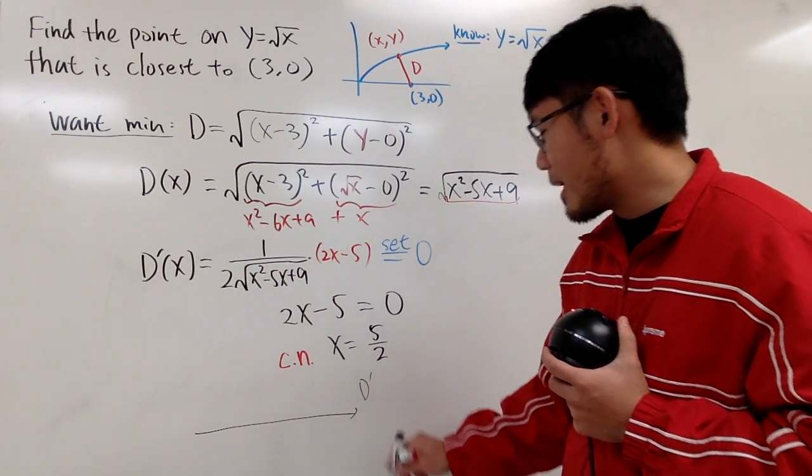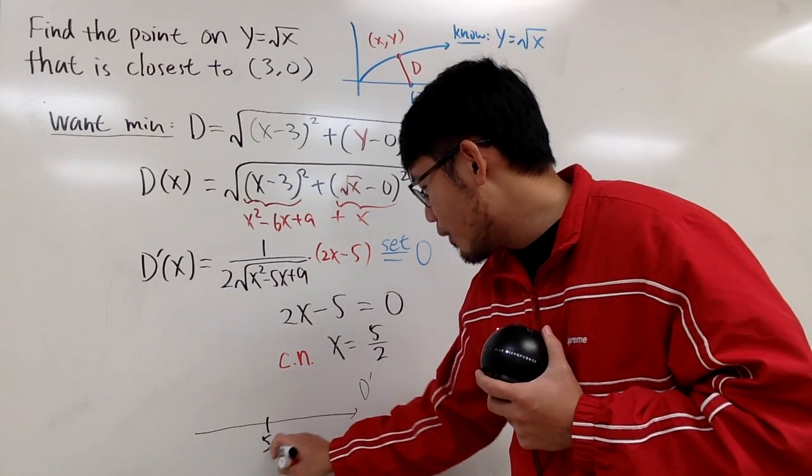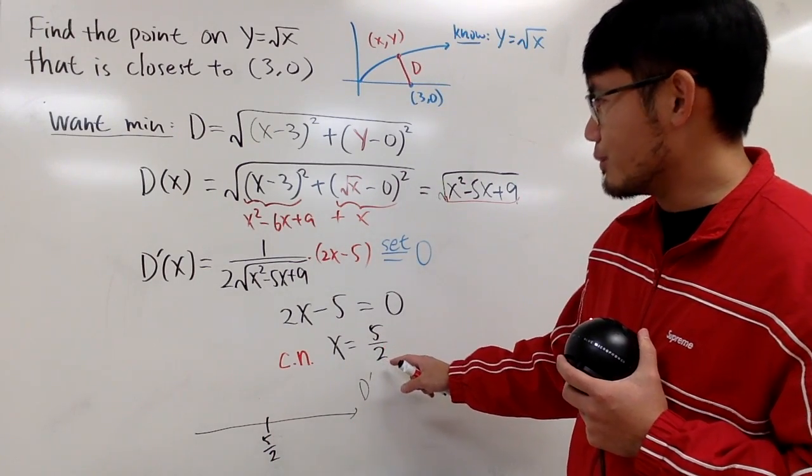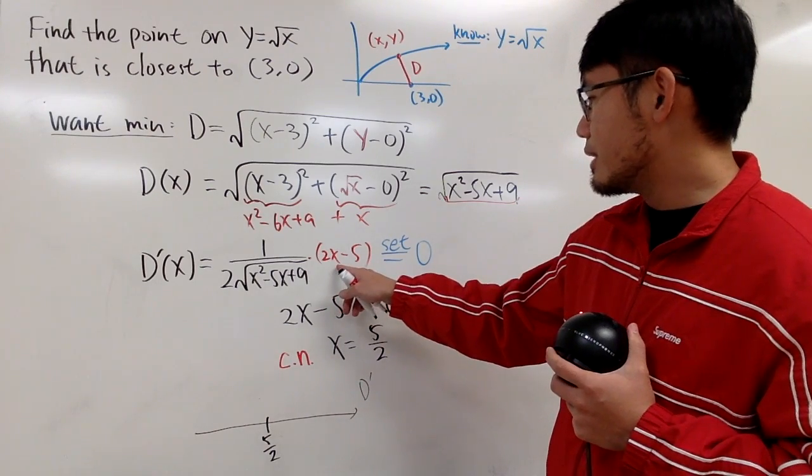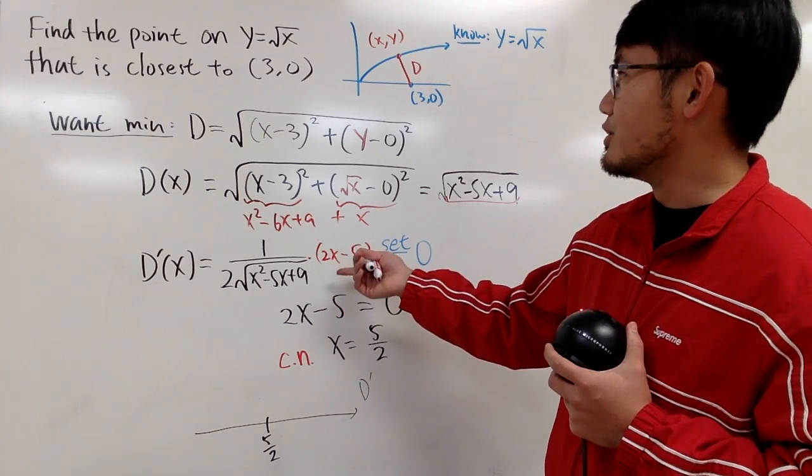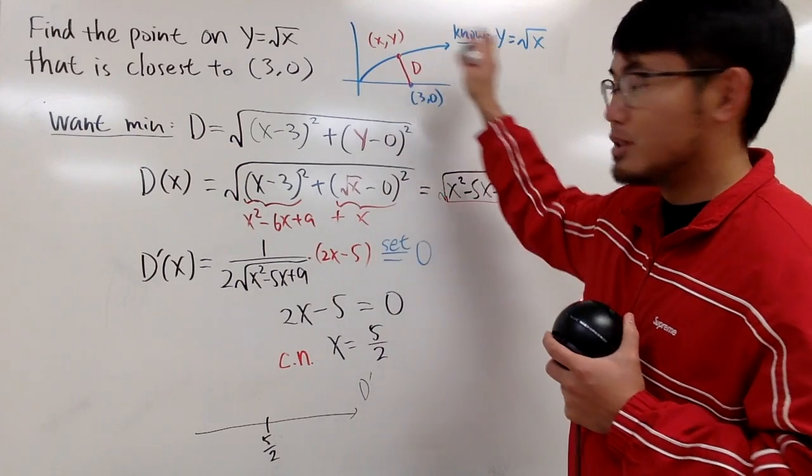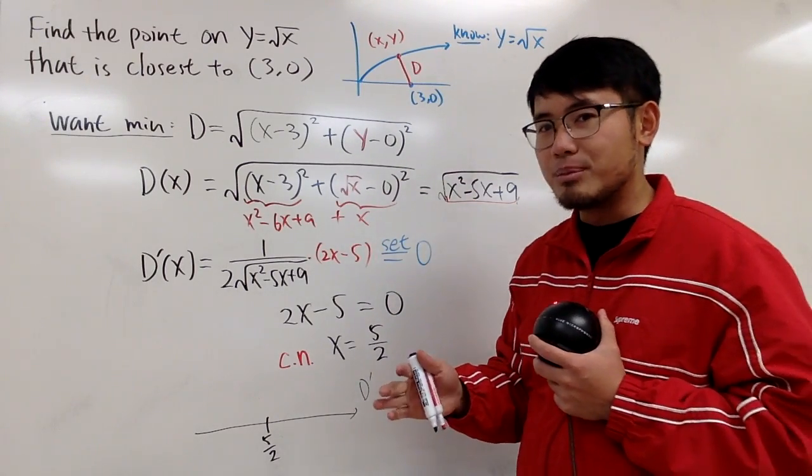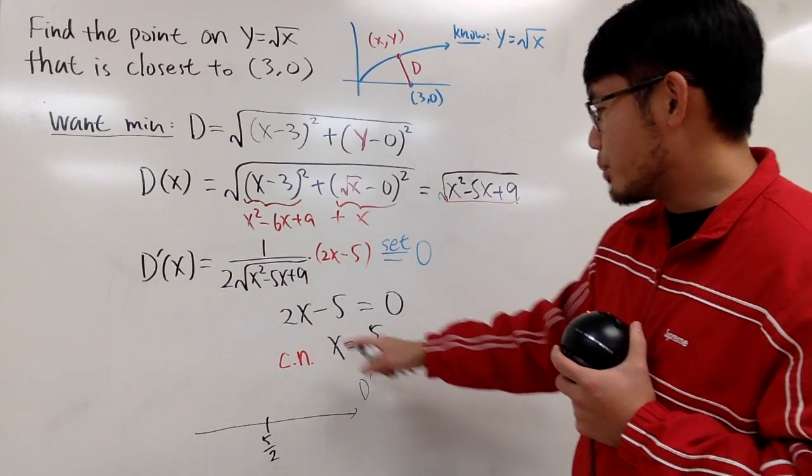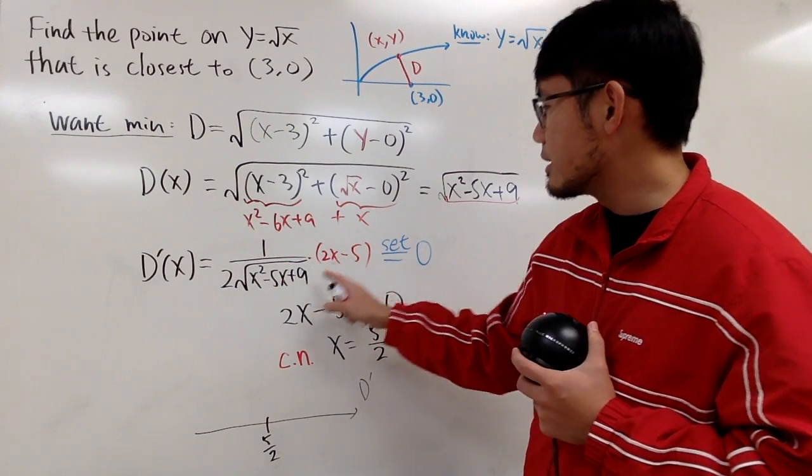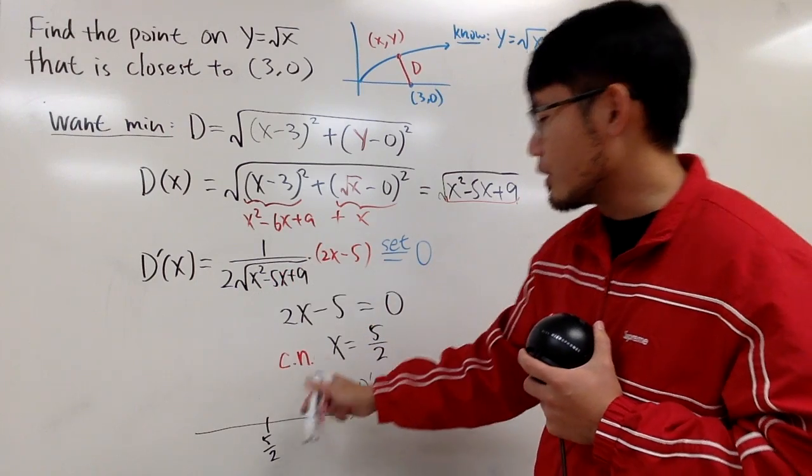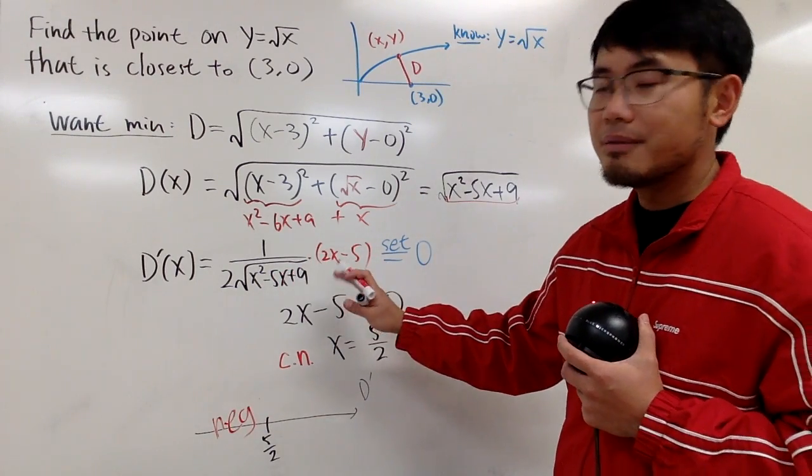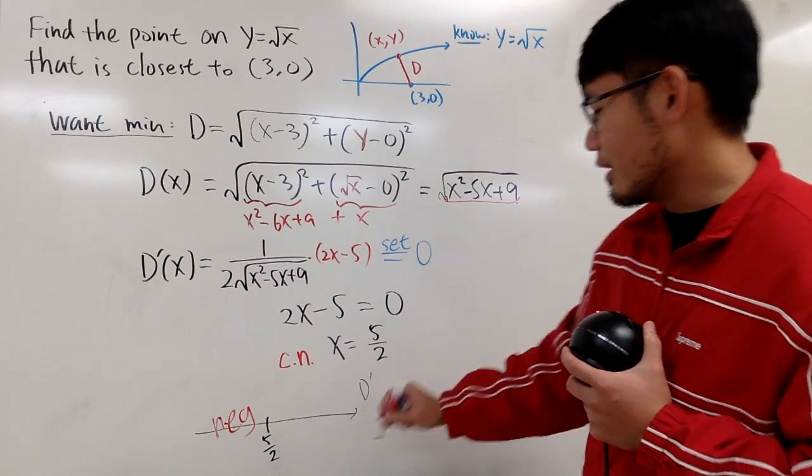This is d prime when x is 5 over 2. Pick a number less than 5 over 2. Well, you can put, let's say, 0. 0 works. x can be 0 in our situation. You cannot have negative numbers because right here, if you take the square root of negative number, you don't get real numbers. So if you put 0 right here for the x, on the top is negative, on the bottom is positive, so you have negative. And then you put a number bigger than 5 over 2, let's say 17, you end up as positive.